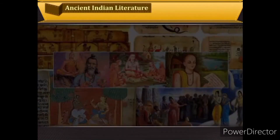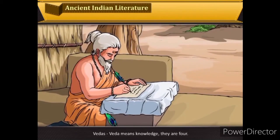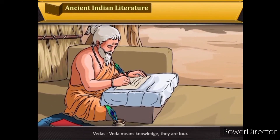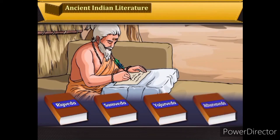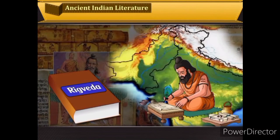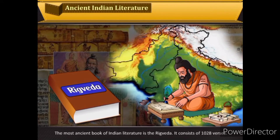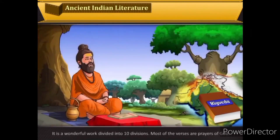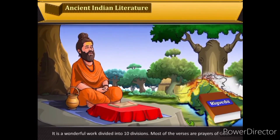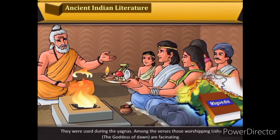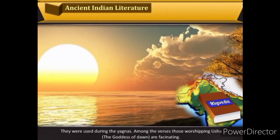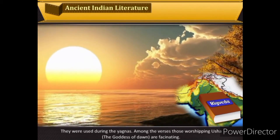The ancient Indian literature — Vedas: Veda means knowledge, and they are four. The Rig Veda, the most ancient book of Indian literature, consists of 1028 verses. It is a wonderful work divided into ten divisions. Most of the verses are prayers to God, used during yajnas. Among the verses, those worshipping Usha, or the goddess of dawn, are particularly fascinating.